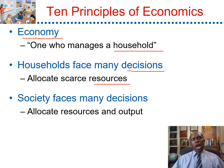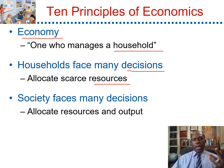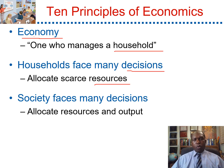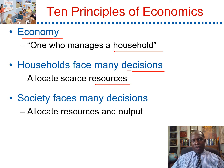Resources are the factors of production. There are four types of resources: land, labor, capital, and entrepreneurship. Resources are used to produce goods and services. One example of goods is food or a car. One example of services is education or healthcare.